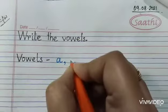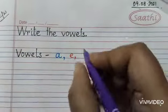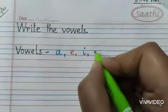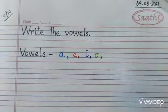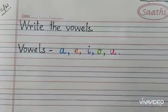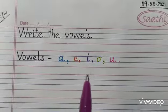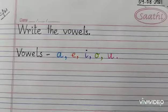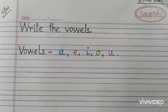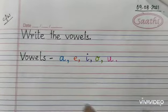A, E, I, O, and U. I am using different colors for mentioning the vowels, but you will write with your pencil — no need to use the colors. I'm using colors so that you can easily understand.